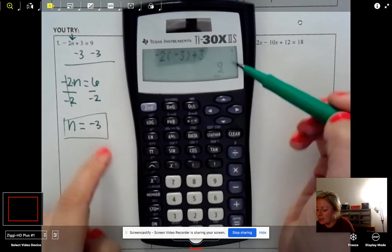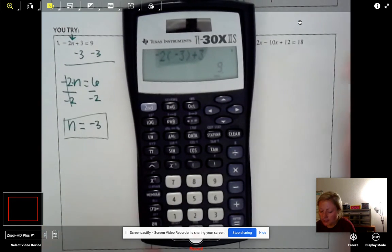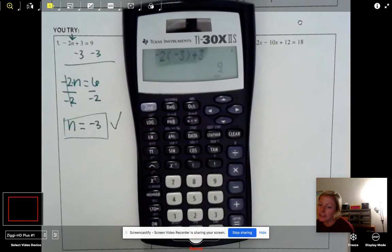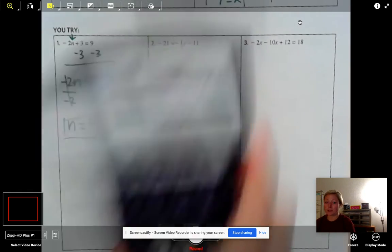So if you want to check it without doing it by hand like we did up here, you can just put a little check mark like, yeah, I know that's right. I checked it in my calculator.